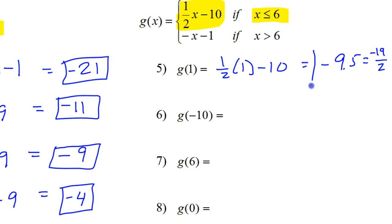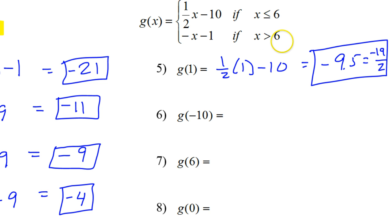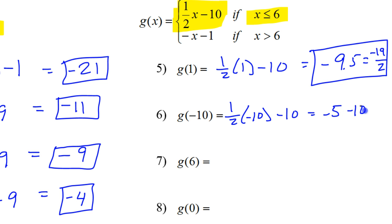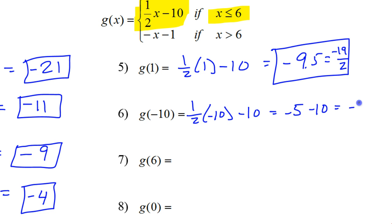Number 6: x equals negative 10. Is negative 10 less than or equal to 6? Yes, negative 10 is less than 6. So we're using the top part of this function: one half of negative 10 minus 10. Half of negative 10 is negative 5, so that's negative 5 minus 10, which is negative 15.